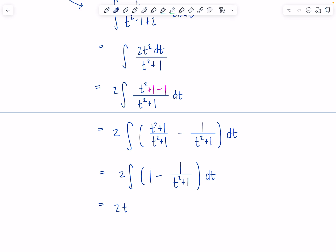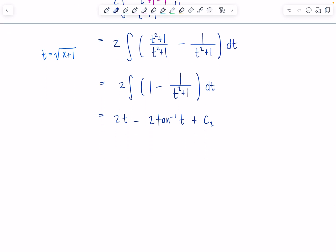And then remember, originally, t was equal to the square root of x plus 1, so let's sub that back in. So this is 2 times the square root of x plus 1, minus 2 tan inverse square root x plus 1, plus c2. Good, you guys. So then put it all together, all together now.